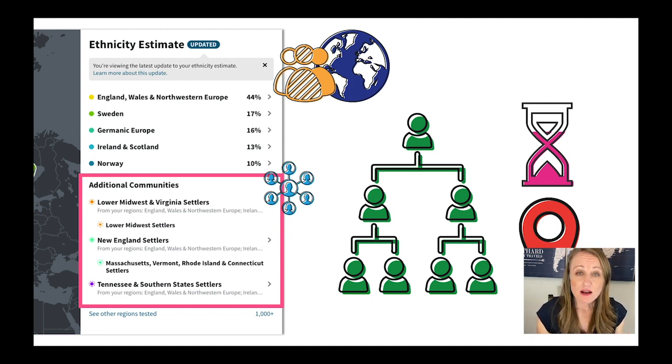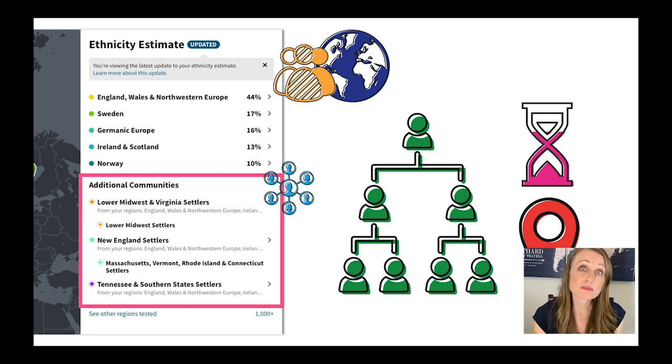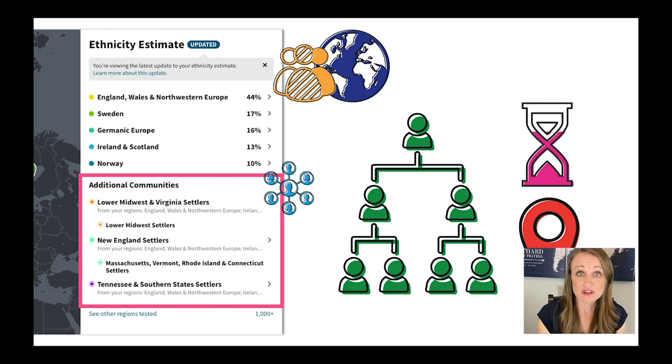If you have enough people that you're matching who are from a particular community, AncestryDNA is going to assign you to that community.